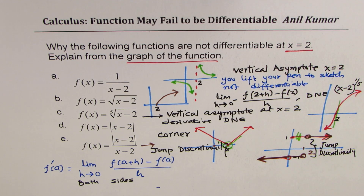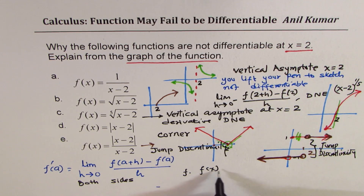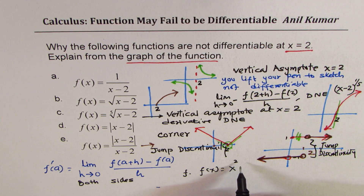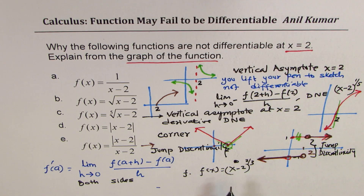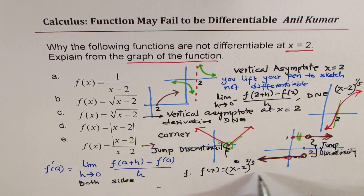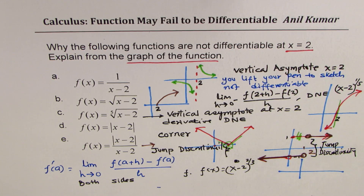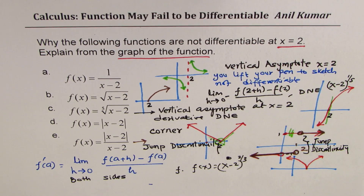There could be one more example. Let me write another function: f(x) equals x minus 2 to the power of 2 over 3. Since we are working at x equals to 2, we will translate this two units to the right and then sketch this function. From there we will talk about its differentiability. This function will look kind of like this — it has a cusp at x equals to 2.